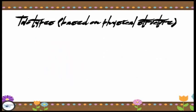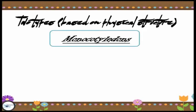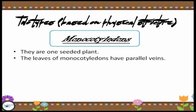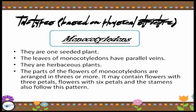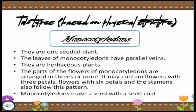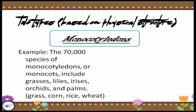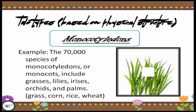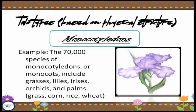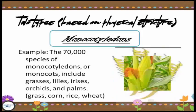In terms of flowering plants, we have two types based on physical structure. The first is monocotyledons. Monocotyledons are one-seeded plants and their leaves have parallel veins. They are herbaceous plants. The parts of the flowers of monocotyledons are arranged in threes — they may contain flowers with three petals, flowers with six petals, and their stamens also follow this pattern. They also make a seed with a seed coat. Around the world there are 70,000 species of this kind, including grasses, lilies, irises, orchids, palms, corn, rice and even wood.